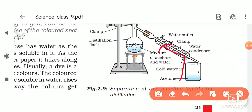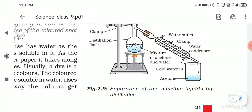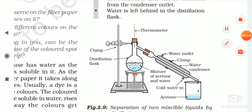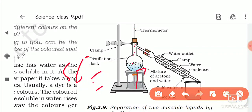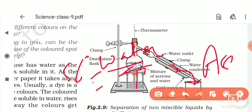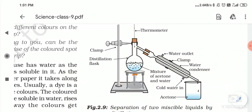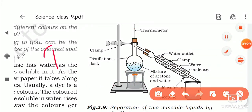When the mixture reaches 56 degrees Celsius, acetone starts evaporating, then condenses and converts into liquid form, which we collect. Water is left behind in the distillation flask. This is how we separate water and acetone, and this process is called distillation.